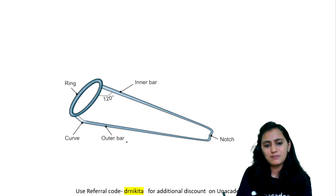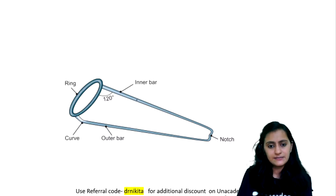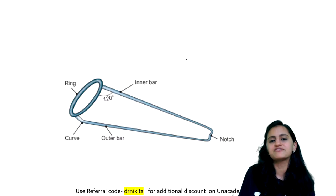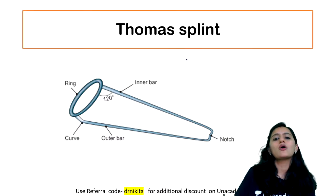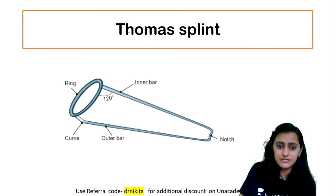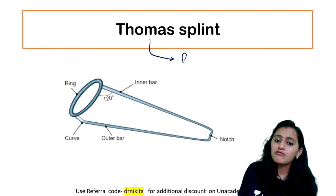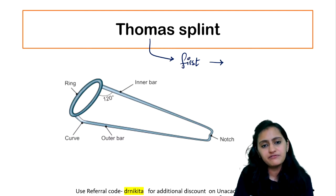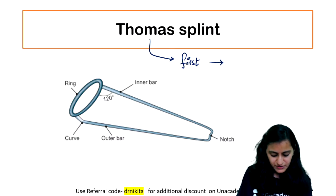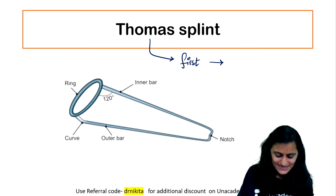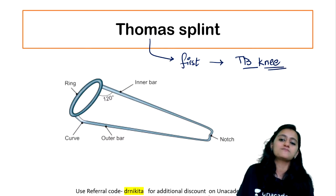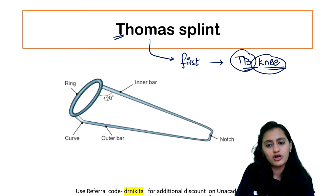Next one — identify this splint. Very easy and very frequently asked. The first splint you read is your Thomas splint. Thomas splint — if you get the question: it was first used for which condition? The options are fracture neck of femur, fracture shaft of femur, fixed flexion deformity of hip, or tuberculosis of knee. It was first used for TB knee by Thomas — that is why it's called Thomas splint. So remember: Thomas was used for TB knee.